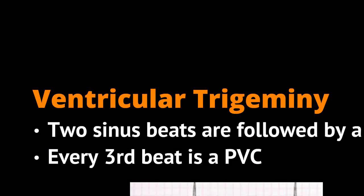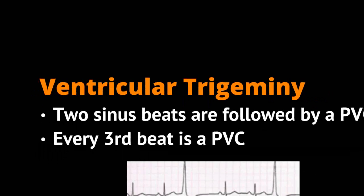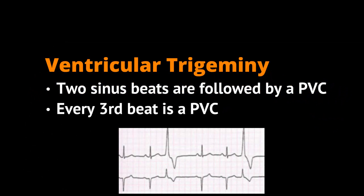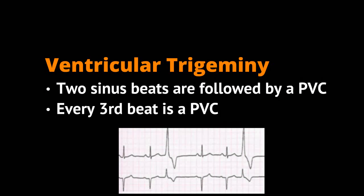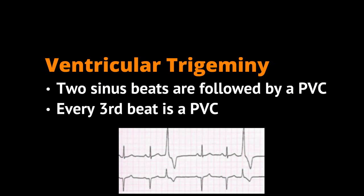Ventricular trigeminy is when you have two sinus beats followed by a PVC — essentially, every third beat is a PVC. You'll note on the strip below, you'll see two normal beats and a very large QRS complex. This large QRS complex is the PVC, and the coupling of these beats together is what is called trigeminy.